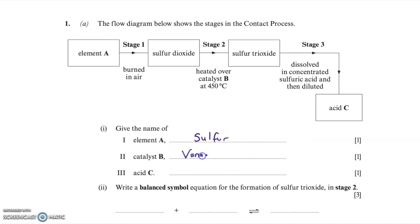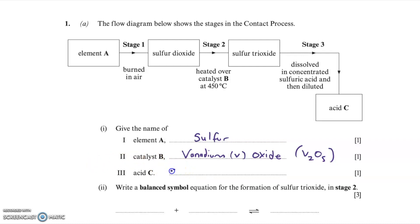Part 2 asks for the catalyst — the catalyst is vanadium 5 oxide. Catalyst B is vanadium 5 oxide, and you can also write down its formula, which is V2O5. That is the catalyst needed in stage 2. The acid produced in the contact process is sulphuric acid, and they would also accept the formula H2SO4.